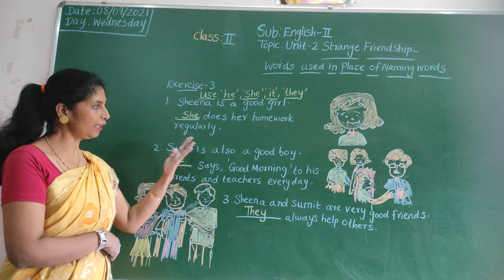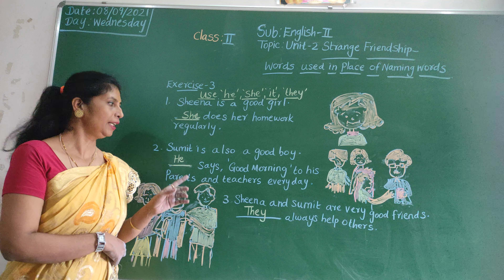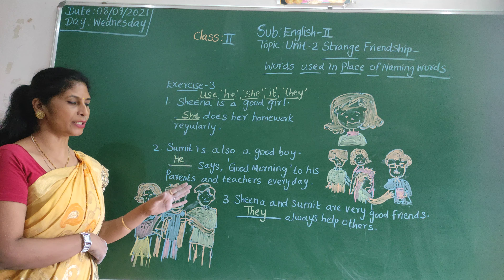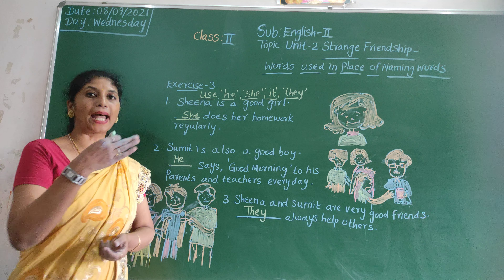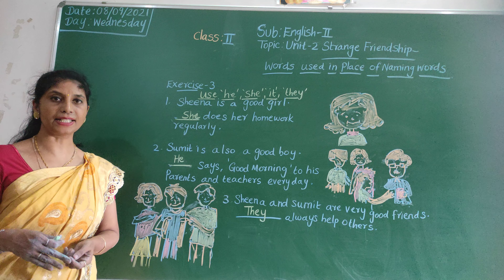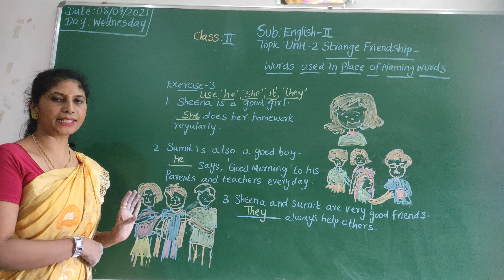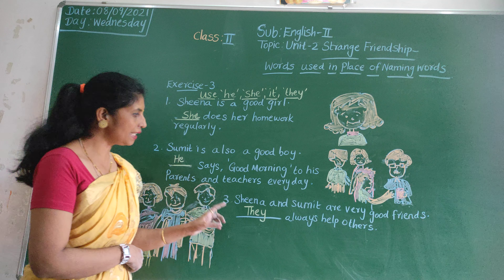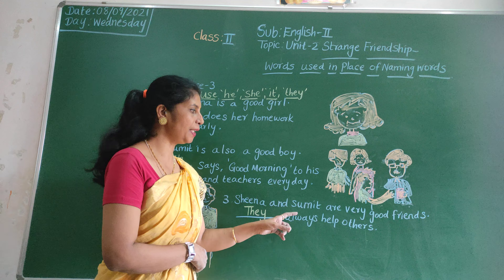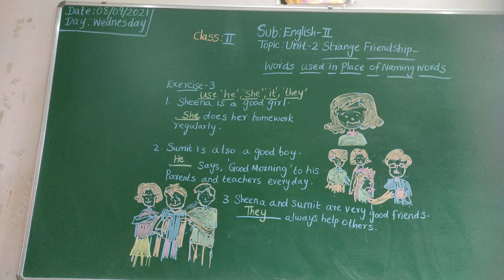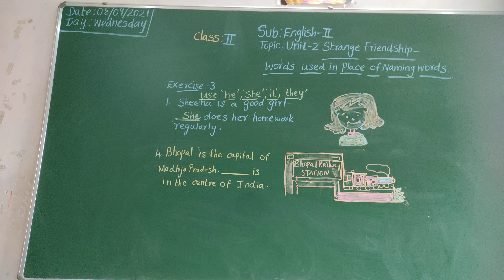Sheena is a good girl. She does her homework regularly. Sumit is also a good boy. He says good morning to his parents and teachers everyday. Sheena and Sumit are very good friends. They always help others.